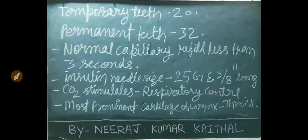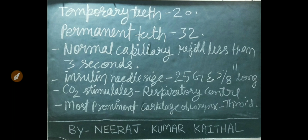Total temporary teeth are 20. Permanent teeth are 32. Normal capillary refill is less than 3 seconds. Insulin needle size is 25 gauge and 5/8 inches long. CO2 stimulates the respiratory center. The most prominent cartilage of the larynx is the thyroid cartilage.